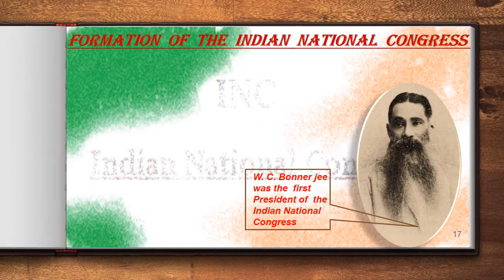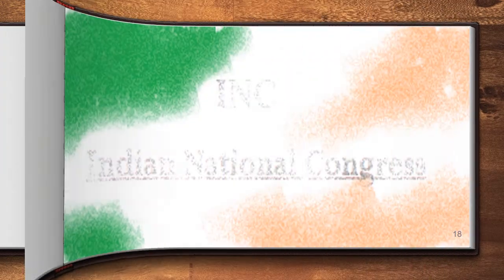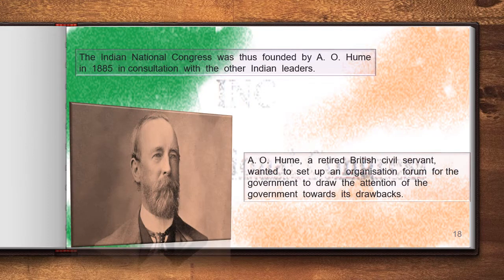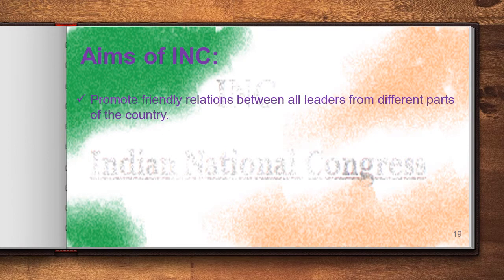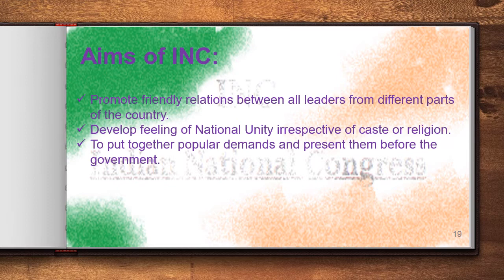Many leaders such as Surendranath Banerjee, Dadabhai Naoroji, Pherozeshah Mehta, and Justice Ranade were looking forward to establishing an Indian organisation. At this time, A.O. Hume, a retired British civil servant, wanted to set up an organisation to draw the government's attention towards its drawbacks, and to avoid the outbreak of any revolt similar in magnitude to the revolt of 1857. The aims of the INC were to promote friendly relationships between leaders from different parts of the country, develop a feeling of national unity irrespective of caste or religion, present popular demands before the government, and train and organize public opinion in the country.